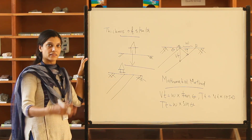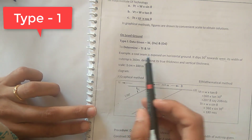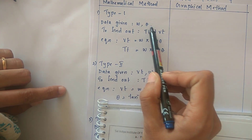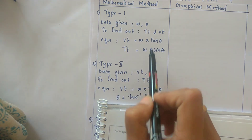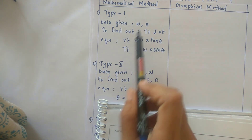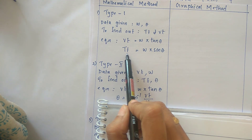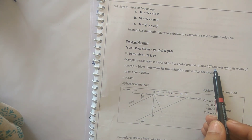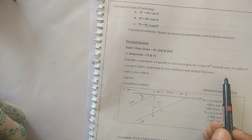Another method is the graphical method, which we will discuss as per the dimensions. In Type 1, the data given will be W — that is width of outcrop — and angle of inclination theta, and you have to find out true thickness and vertical thickness using both mathematical and graphical methods. The example question: A coal seam is exposed on a horizontal ground, dipping 30 degrees towards west. Its width of outcrop is 360 meters. Determine true thickness and vertical thickness.